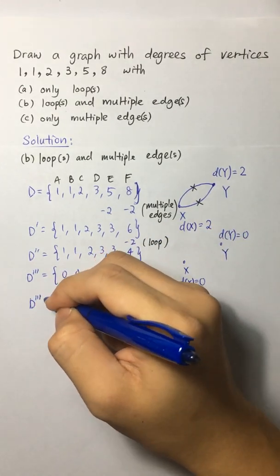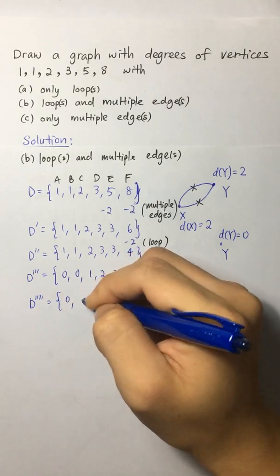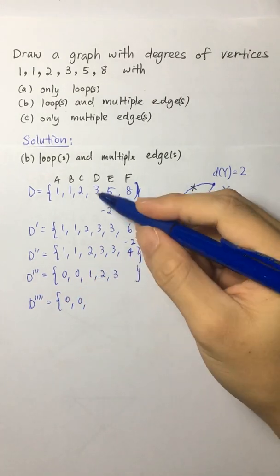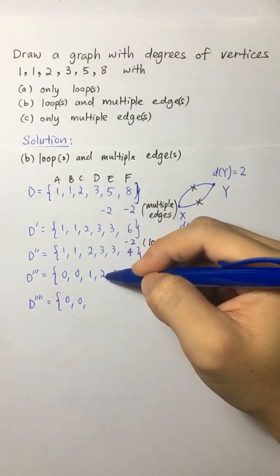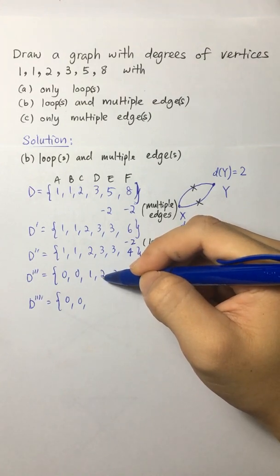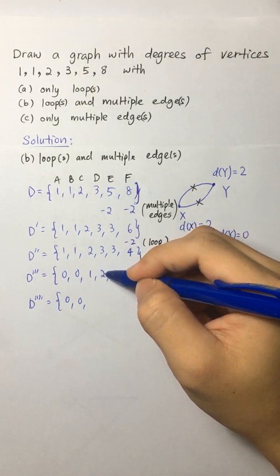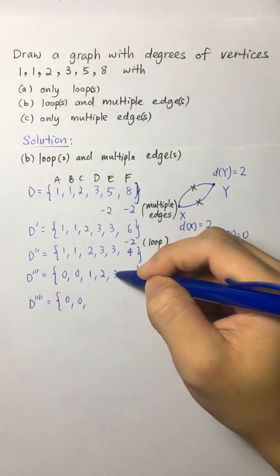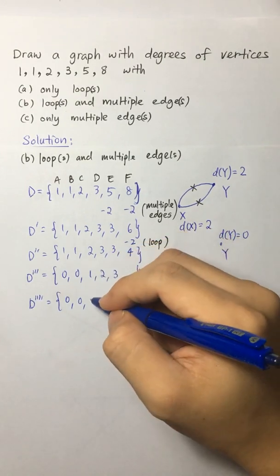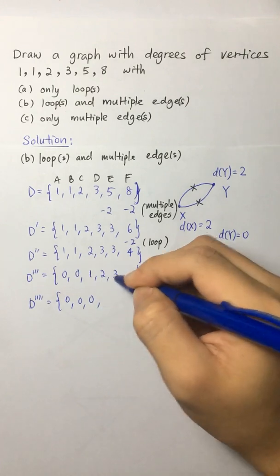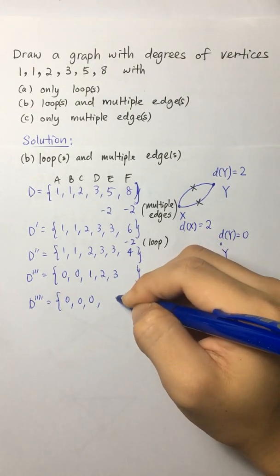Again, I can repeat the process by removing, let's say I remove D. When I remove D, I have to remove the corresponding edges. So the edges are actually connecting to C and E. So I remove the D, then 1 minus 1 is 0, and 3 minus 1 is 2.